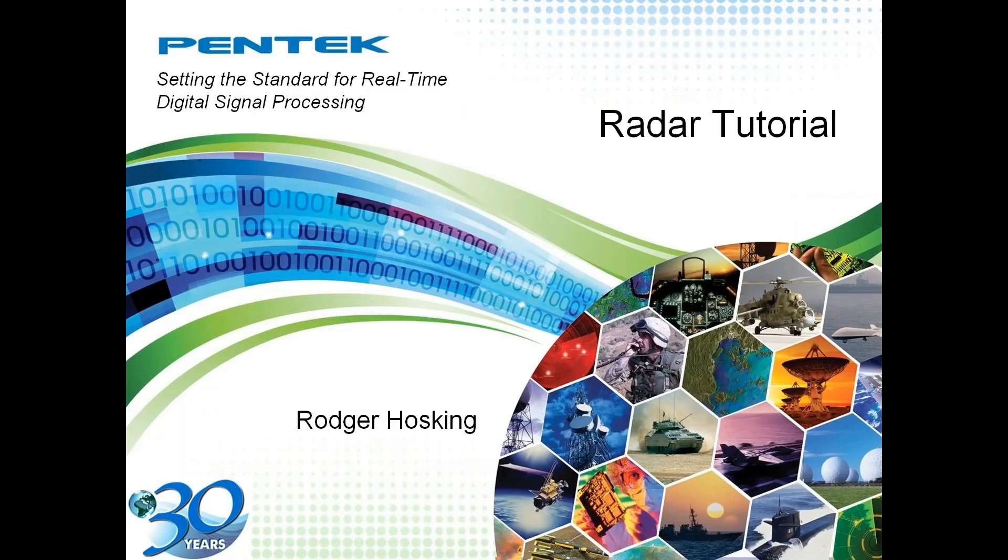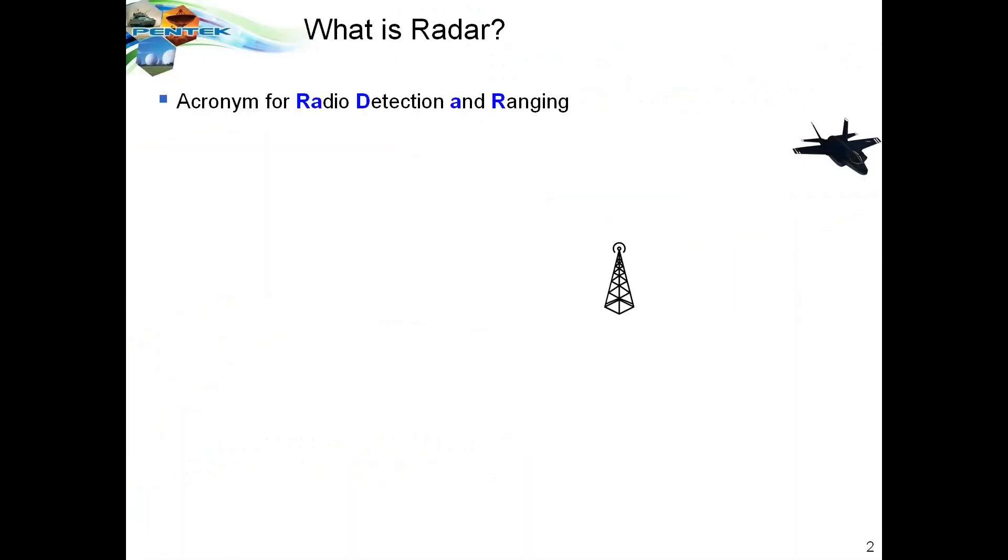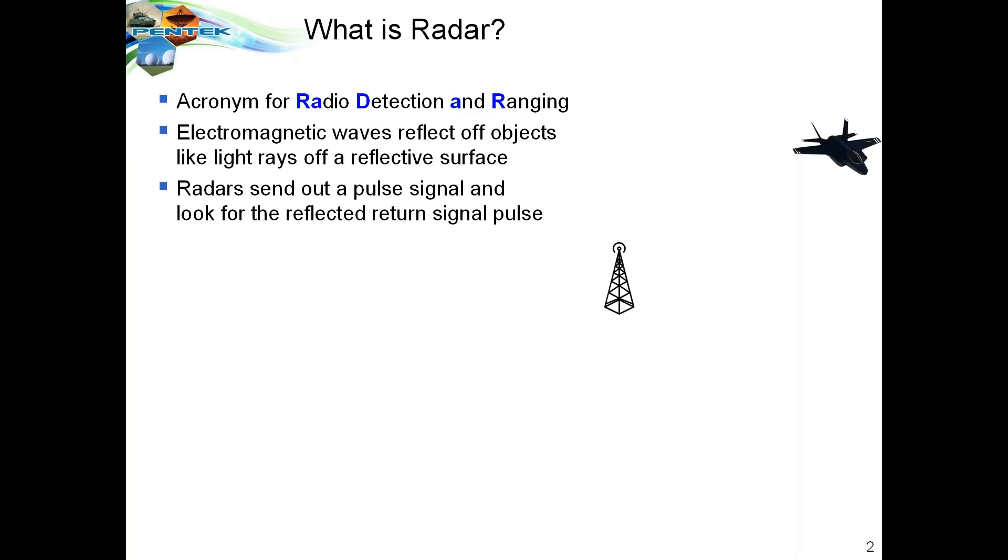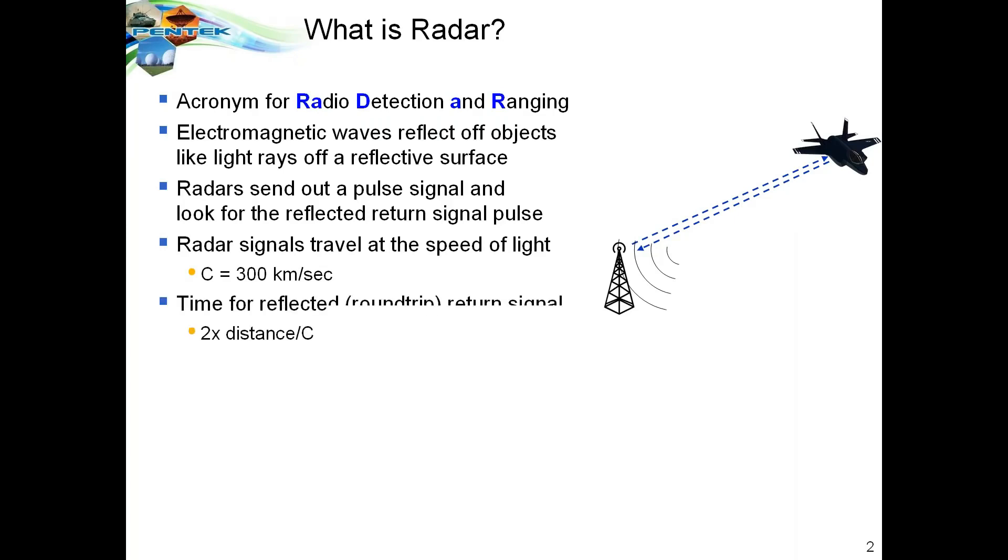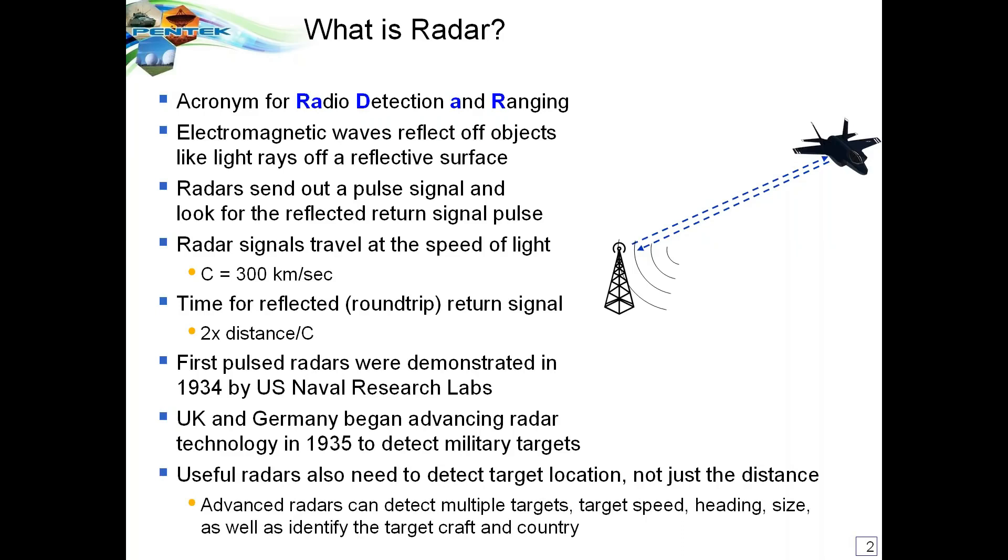Hello, this is Roger Hosking and today we're going to present a radar tutorial which gives some of the basics of how radars work. What is radar? Radar is an acronym for radio detection and ranging. As you may know, electromagnetic waves reflect off objects like light rays reflect off a reflective surface. Radars send out pulse signal and look for reflective return signal pulse. And you probably also know that radar signals, because they're electromagnetic signals, travel at the speed of light or 300 kilometers per second. The time it takes for a reflected signal to return back to the antenna is twice the distance divided by the speed of light. But useful radars also need to detect the target location, not just the distance. And advanced radars can detect multiple targets, the speed, the heading, the size, as well as the identity of the target craft and perhaps even the country it's from.